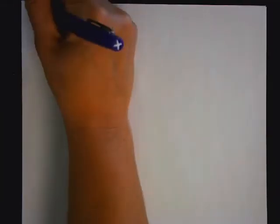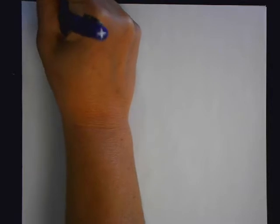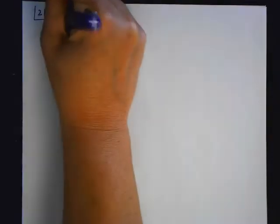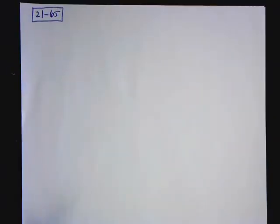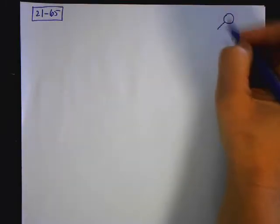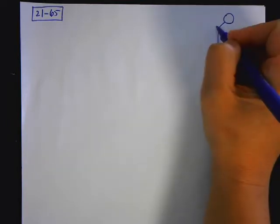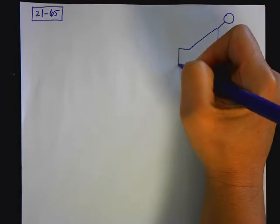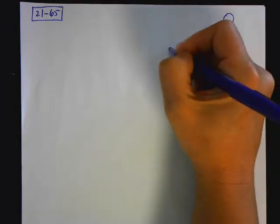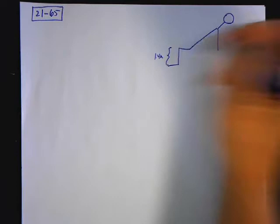We're going to look at problem 2165. If you look at 2165, it looks exactly like 64, except there's another added part to it. But we'll still draw the picture. So we have two masses, and they're on an incline. And what we're going to do at first is we're just going to ignore the second part of the problem.